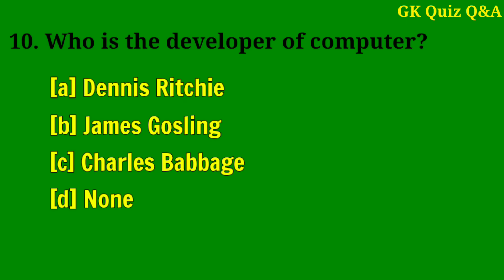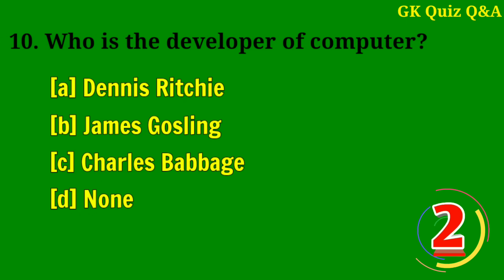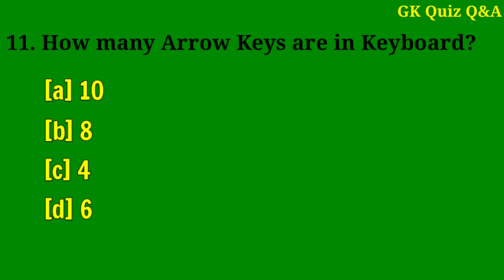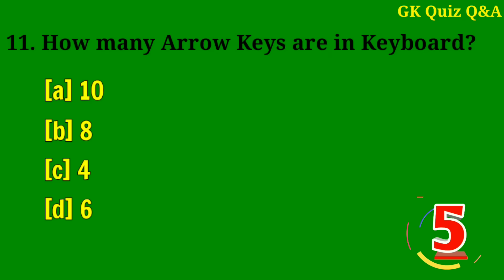Who is the developer of computer? Answer C: Charles Babbage. How many arrow keys are in the keyboard? Answer C: Four arrow keys.